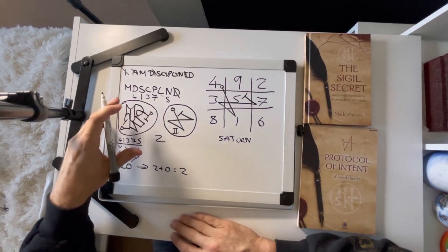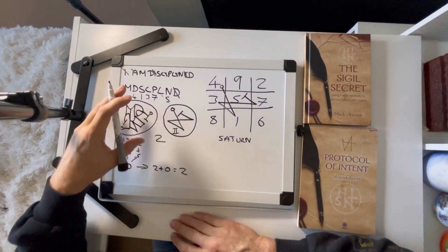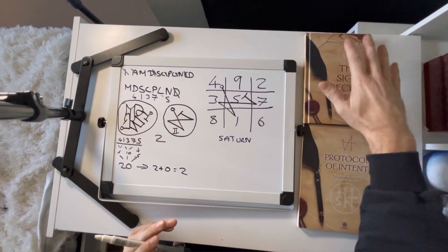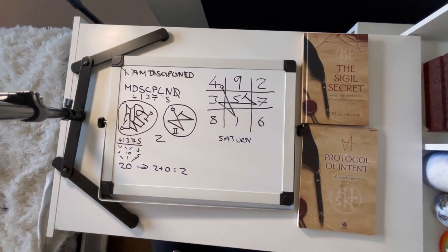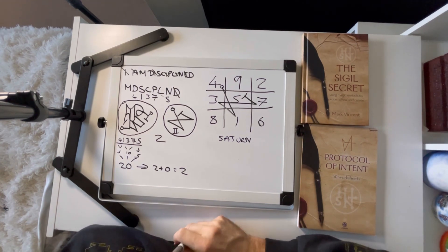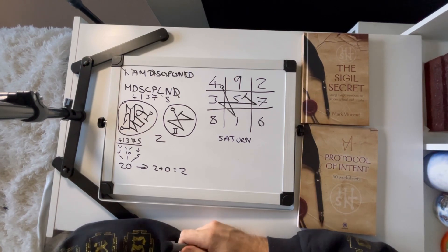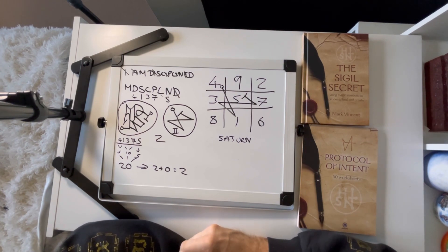So there you go. I am disciplined. Letter sigil, planetary sigil, and then how to make a magic number for the sigil. All of this is put in great detail in my book, The Sigil Secret. It's available from Treadwell's Books in London and worldwide on Amazon. It's also available from thechaoschamber.com. Go there. Drop me an email. Ask me any questions you like. Don't forget to like and subscribe. And I'll see you on the next Chaos Chamber. Thanks.